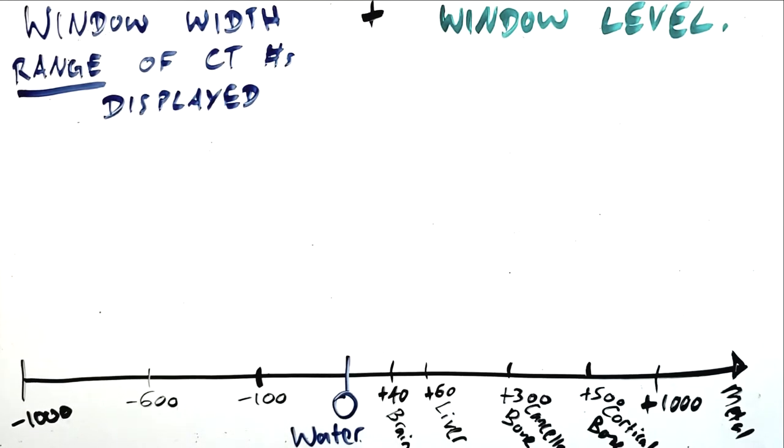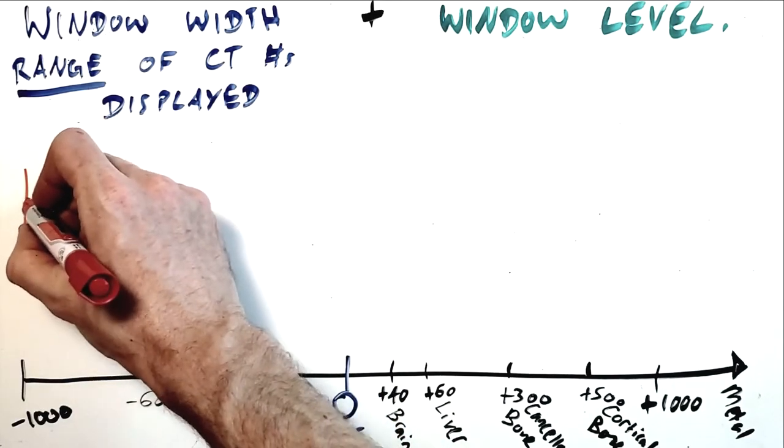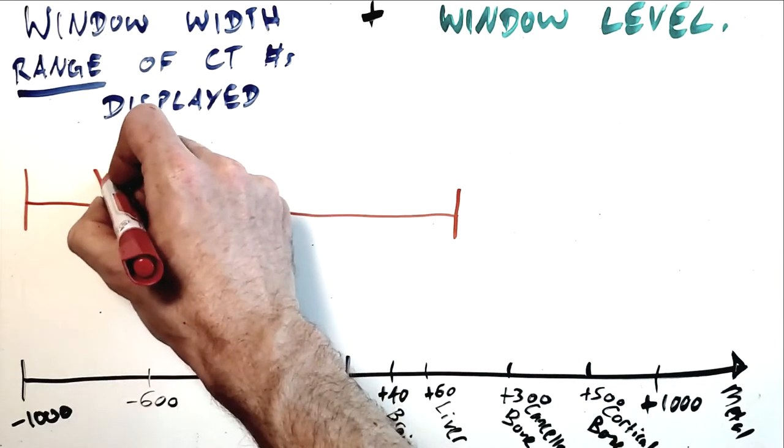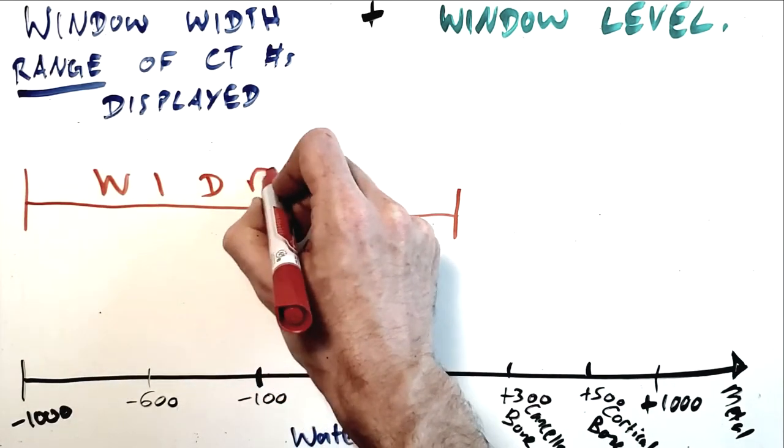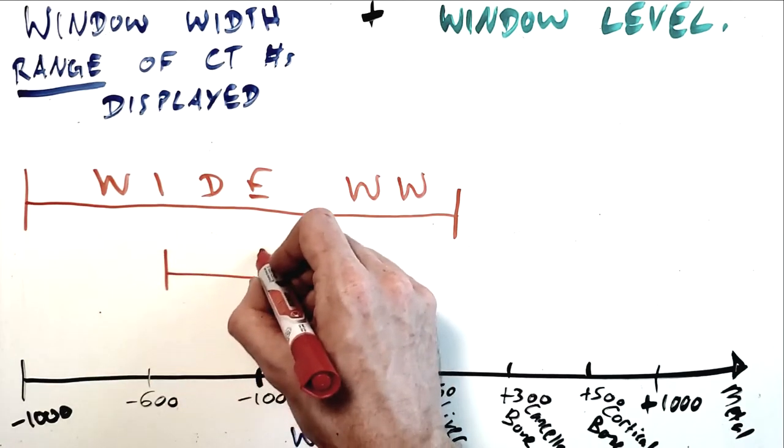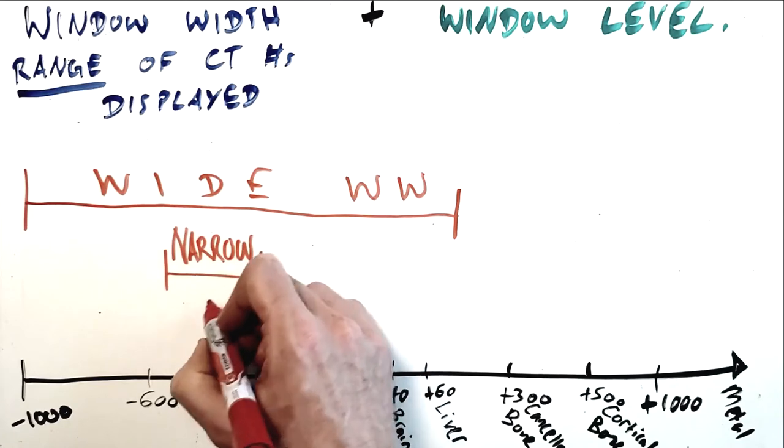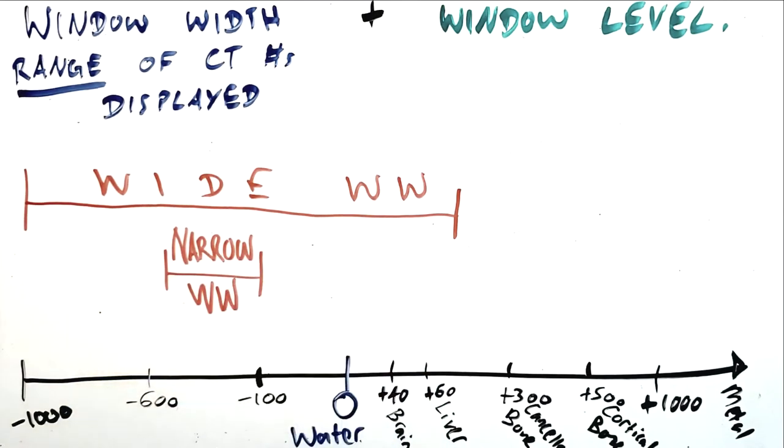Window width refers to the range of CT numbers displayed. So if we want to see every shade between black and white spread out over a wide range of tissue densities, we can use a wide window width. Conversely, if we want to see a very small range of tissue densities which are close together to the exclusion of everything else, we can use a very narrow window width.